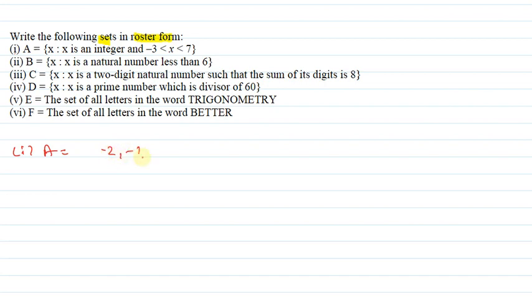So this is minus 2, minus 1, 0. And where will it go? Less than 7. So, 1, 2, 3, 4, 5, 6. So this is how we represent them in roster form.